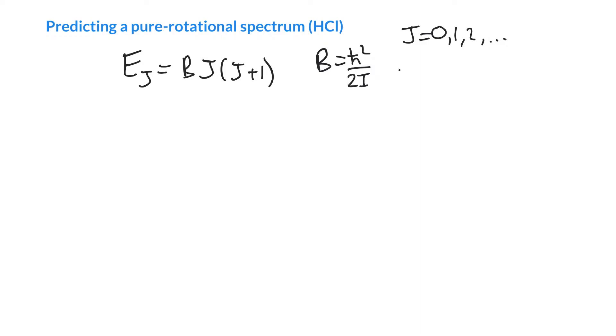We also have our selection rule where delta J can only change by 1 unit. For absorption, it's going to go up by 1 unit; for emission, it goes down by 1 unit. h-bar is what we'd expect, h over 2π.